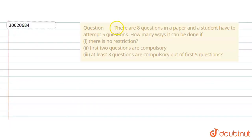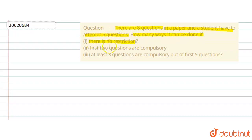The question is given: There are 8 questions in a paper and the student has to attempt 5 questions. How many ways can it be done if — (i) there is no restriction, (ii) the first 2 questions are compulsory, (iii) at least 3 questions are compulsory out of the first 5 questions.